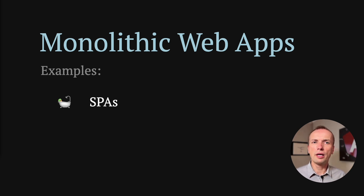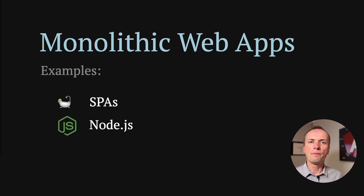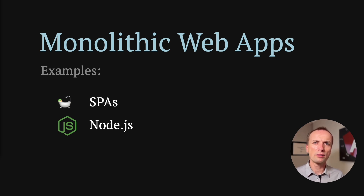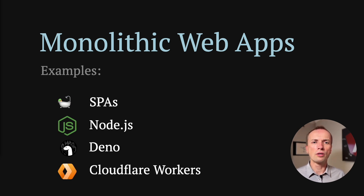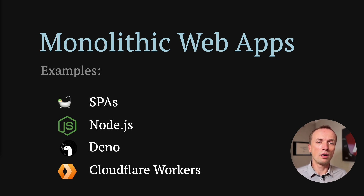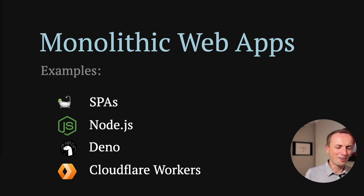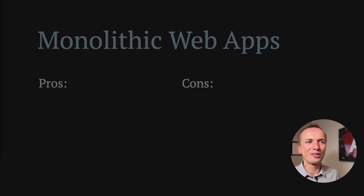Examples of monolithic applications: the most common one is SPA — single page applications — all of us have built some. But also Node.js: most Node.js applications, unless you're using advanced APIs like child process or vm module, are most likely monolithic even if not bundled. Deno — the same thing. And the same applies to Cloudflare Workers, which is interesting because we have this very nimble runtime deployed to 400 cities around the world, and people still build bigger and bigger monolithic applications and deploy to them. It works, but we could do better.